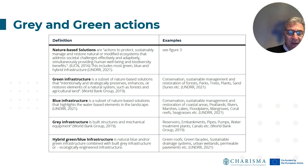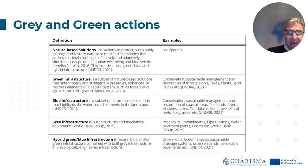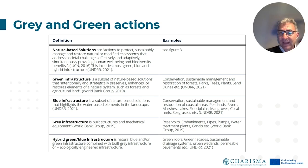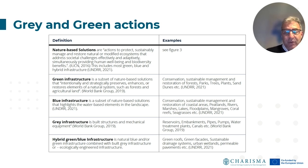Among nature-based solutions, we have green infrastructures and blue infrastructures. Green infrastructures are a subset of nature-based solutions that intentionally or strategically preserve, enhance, or restore elements of natural systems such as forests or agricultural land — humans working with green spaces for sustainable and safe management against natural disasters. Blue infrastructures work with water-based elements of the landscape, such as wetlands or natural water storage, used for preventing flood hazard. The hybrid green-blue infrastructure combines the two, and you can see some examples of green, blue, gray, and hybrid infrastructures in the table on the right.